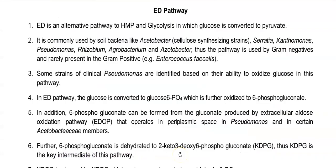The salient features of this ED pathway: it is an alternative pathway, with the hexose monophosphate pathway and glycolysis being the prime pathways for glucose conversion to pyruvate. It is commonly present in soil bacteria such as Acetobacter, mainly in cellulose-synthesizing strains. Apart from that, Serratia, Xanthomonas, Pseudomonas, Rhizobium, Agrobacterium, and Acetobacter commonly possess this pathway — all Gram-negative — whereas Gram-positive Enterococcus faecalis is also found to have this pathway.